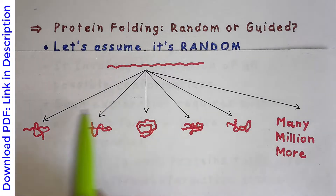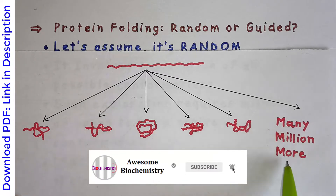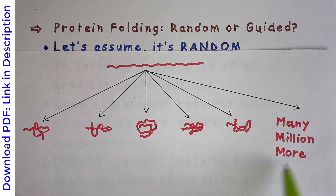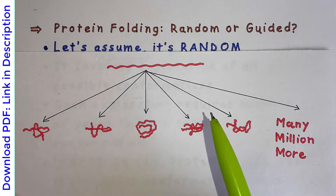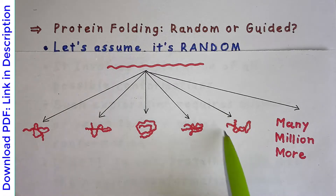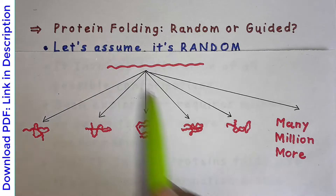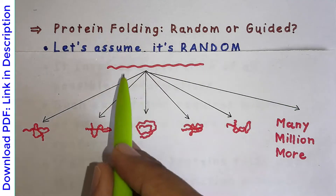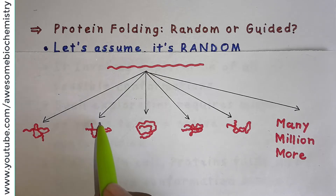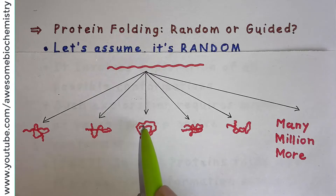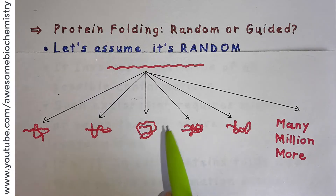Here I have shown five different conformations, and many millions more exist. Out of all these different conformations, only one form is going to be the most stable and biologically functional. If protein folding were truly random, this polypeptide would check each form, find it not stable, then jump randomly to the next, keeping jumping by trial and error until it reaches its most stable form.